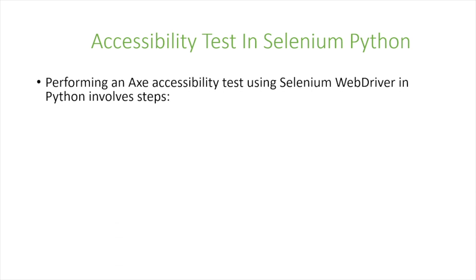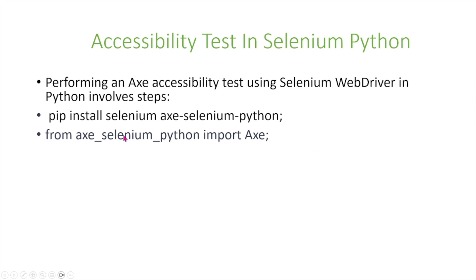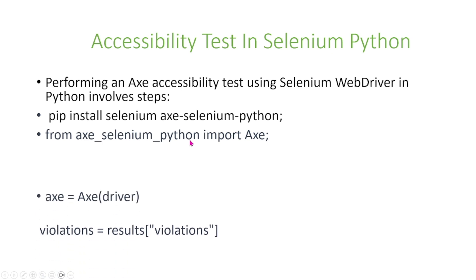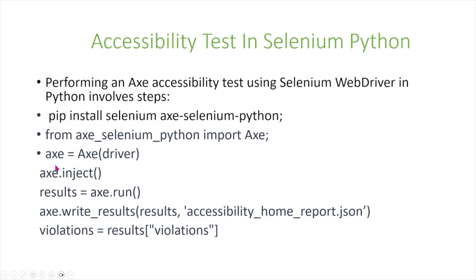Performing an axe accessibility test using Selenium WebDriver in Python involves these steps. First, you have to install the package — you can pip install axe-selenium-python. You'll also need to import Axe from axe_selenium_python. Then you run various commands: you specify the driver, inject it, grab the results, and write the results.